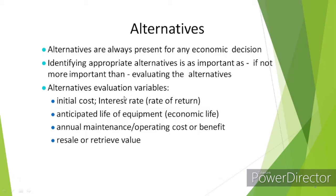There are some alternative evaluation variables. The first is initial cost and interest rate — that is, the rate of return on whatever you are investing in the business process. Then there is the anticipated life of equipment, which is the economic life. The life of your actual equipment is your economic life because you are investing in that equipment. Then there is annual maintenance or operating cost or benefit — once you invest in any type of business you will get benefit after selling that product. Then resell or salvage value — whatever you are reselling, you will get that resell value.